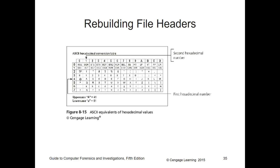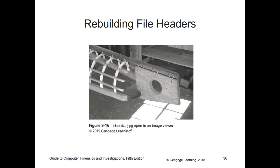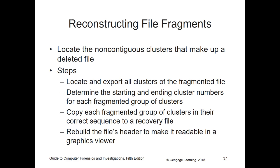Rebuilding the file header using the ASCII — as you start rebuilding the header, you should start being able to view it in an image viewer. When reconstructing file fragments, they won't always be located close to one another. You must locate and export all clusters of that fragmented file. It may be spread throughout a hard drive. You must rebuild the file header first to make it readable in graphic viewers — even if you have the graphic data, if the header is not functioning, it will not work.